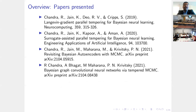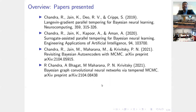I will go over these papers — two of them have been published. The first was in 2019 in Neurocomputing, and surrogate-assisted parallel tempering in 2020. Then two more papers we just placed in arXiv, which are applications of Bayesian MCMC methods for deep learning models.